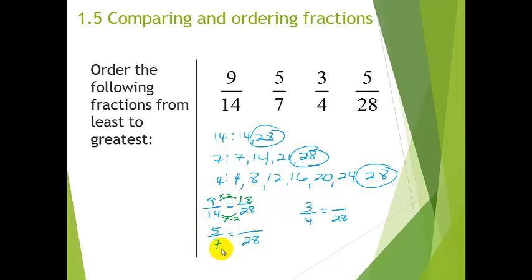And, then you ask yourself, how does a 7 get to a 28? Multiply it by 4. If I multiply the bottom by 4, I better multiply the top by 4 to get an equivalent fraction of 28.